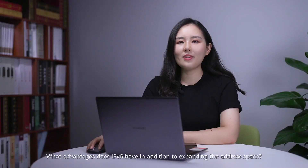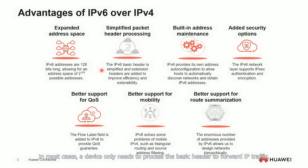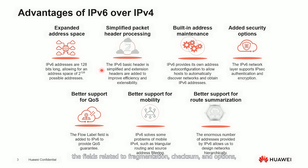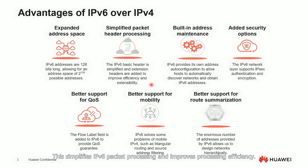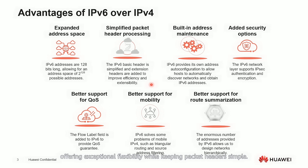What advantages does IPv6 have in addition to expanding the address space? In terms of packet processing, the IPv6 packet format is designed to simplify the basic header. In most cases, a device only needs to process the basic header to forward IP traffic. Unlike the IPv4 header, the IPv6 header does not carry fields related to fragmentation, checksum, and options, but it carries the flow label field. This simplifies IPv6 packet processing and improves processing efficiency. In addition, IPv6 utilizes extension headers to support various options without requiring modification of the existing packet format, offering exceptional flexibility while keeping packet headers simple.